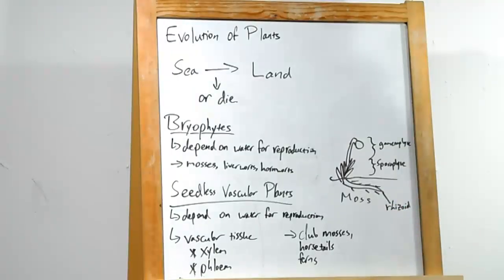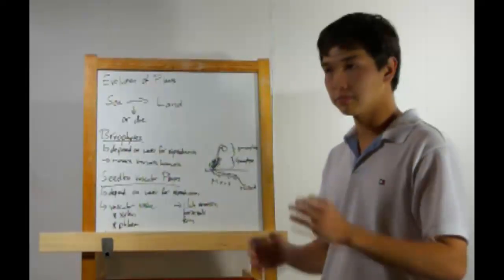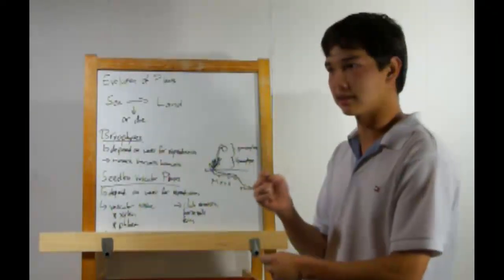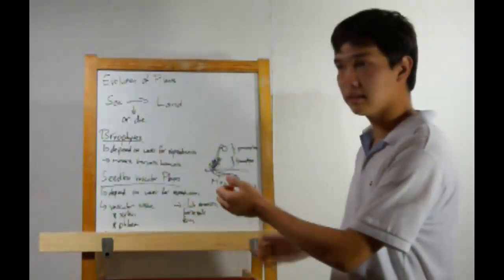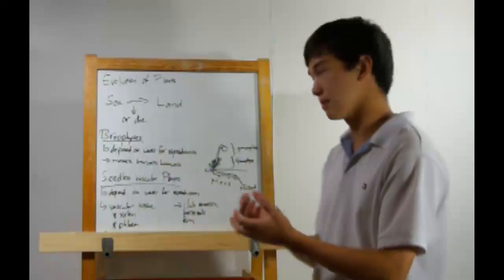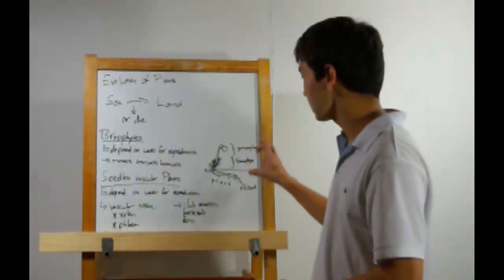Also, underneath the ground we have rhizoid. Which, it looks kind of like a root, but it's not. See, roots act kind of like straws. They're actually vascular tissue, which we'll see next. And they pull water up from the ground. Rhizoid will simply absorb it from nearby. That's how the bryophyte works.